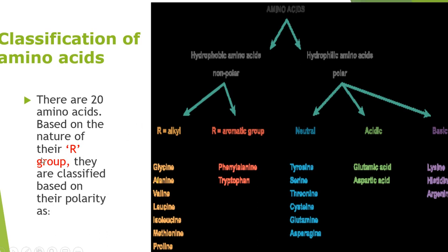Looking at classification by R group: if the R group is an alkyl group, that is one classification; if it is aromatic, that is another. Examples of amino acids containing alkyl groups in the R position include glycine, norleucine, valine, leucine, isoleucine, methionine, and proline.